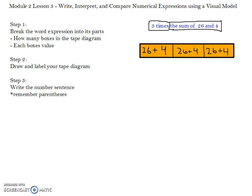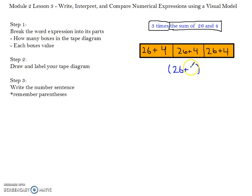Step 3 is you want to write the number sentence for the word expression. Remember to use your parentheses because for 3 times the sum of 26 and 4, you want to make sure that the sum — the value of each individual box — is the expression that you do first. To show that, you use parentheses. So I'll draw my parentheses first. This tells whoever's solving the problem that this comes first according to the order of operations, or PEMDAS. So 26 plus 4 goes first, and then you multiply that three times.